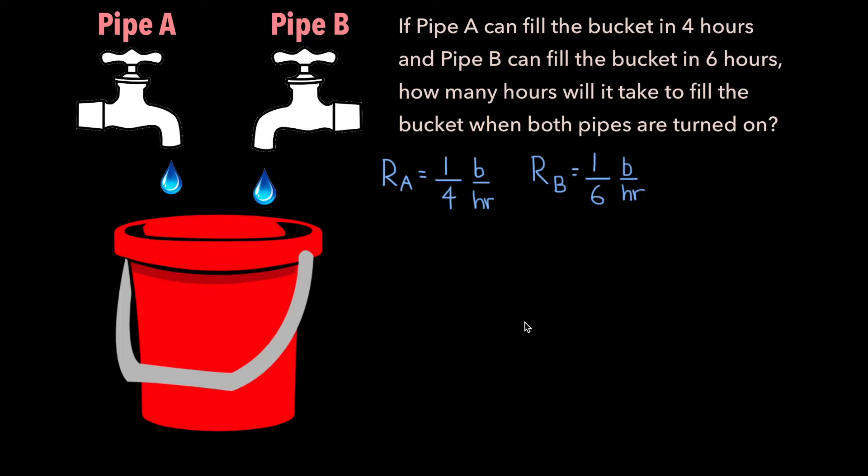Now, the question is asking how long it'll take to fill the bucket when both pipes are turned on. So instead of dealing with the rates individually, we need to combine them to determine what the combined rate is. The combined rate, R sub C, is equal to R sub A plus R sub B.